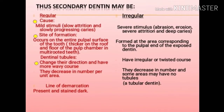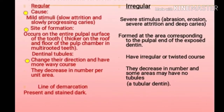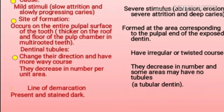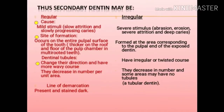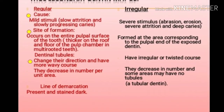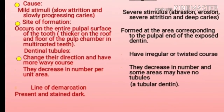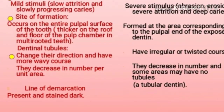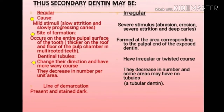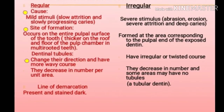Secondary dentine may be regular or irregular. Formation of regular secondary dentine results from mild stimuli, slow attrition, and slowly progressing caries, while irregular secondary dentine results from severe stimulus, abrasion, erosion, severe attrition, and deep caries. Regular secondary dentine forms on the entire pulpal surface, thicker on the roof and floor of the pulp chamber in multi-rooted teeth. Irregular secondary dentine forms at the area corresponding to the pulpal end of the exposed dentine. Dentinal tubules of regular secondary dentine change direction and have a more wavy course, decreasing in number per unit area, whereas tubules of irregular secondary dentine decrease in number and some areas may have no tubules.